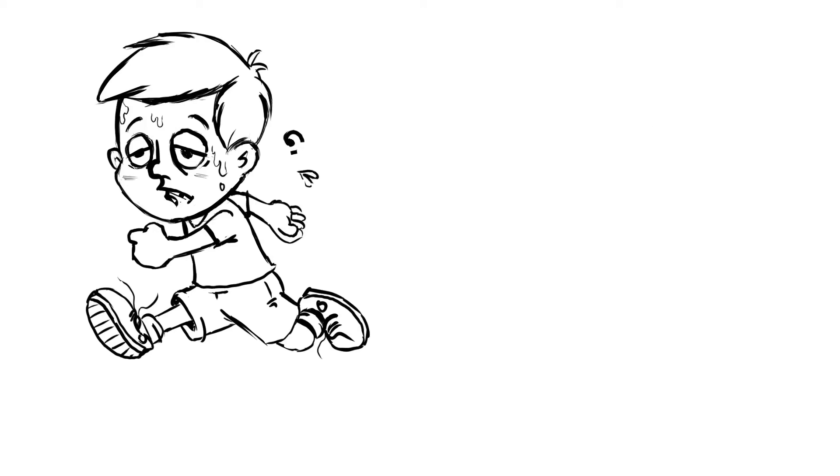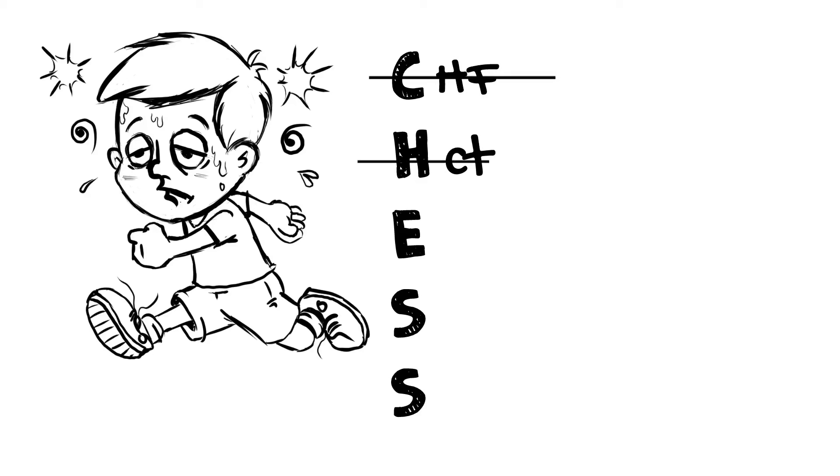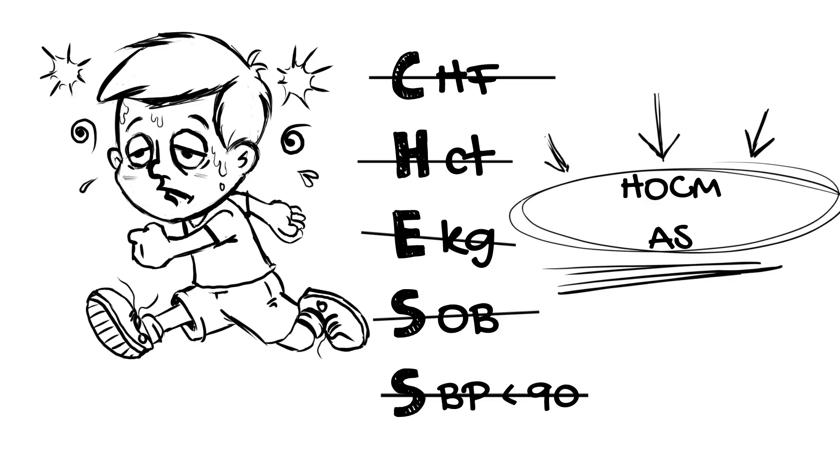The classic one is the kid with exertional syncope. They don't have congestive heart failure, they have a normal hematocrit, they may even have a normal EKG, no evidence of shortness of breath, and a systolic blood pressure which is completely fine for their age. But every time they run they collapse because they've got hypertrophic obstructive cardiomyopathy or aortic stenosis.